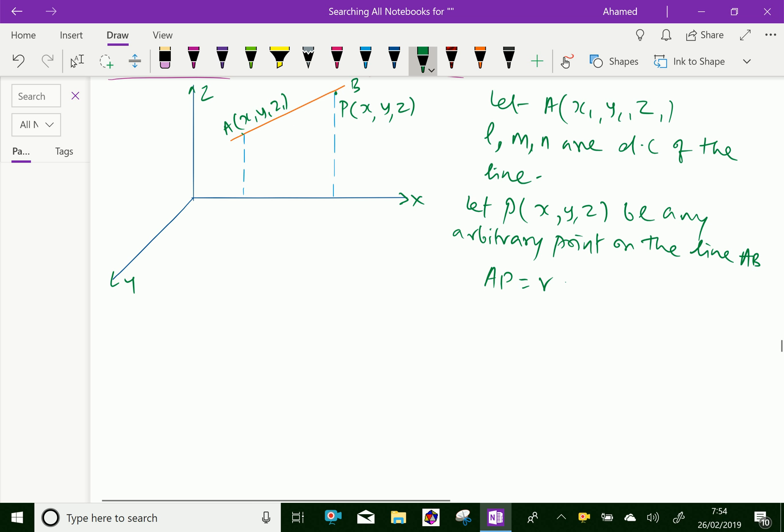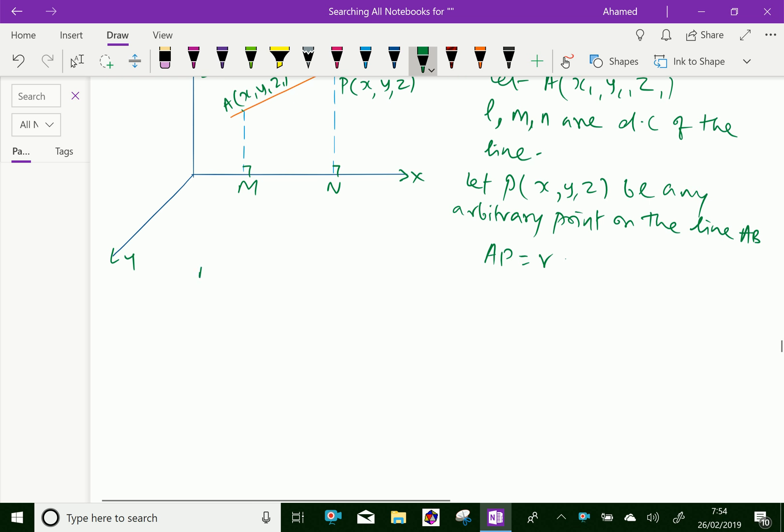Now, here, drop a perpendicular from point A to X axis. It meets at M. This point is at N. M and N are feet of perpendiculars on X axis.